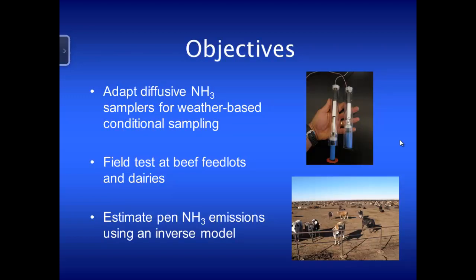So the objectives were to adapt these diffusive samplers that a lot of folks have been using to do conditional sampling — meaning they don't sample all the time. They only are exposed to the air when we have winds coming from a certain direction at certain speeds. And we wanted to test this at feedlots and dairies.